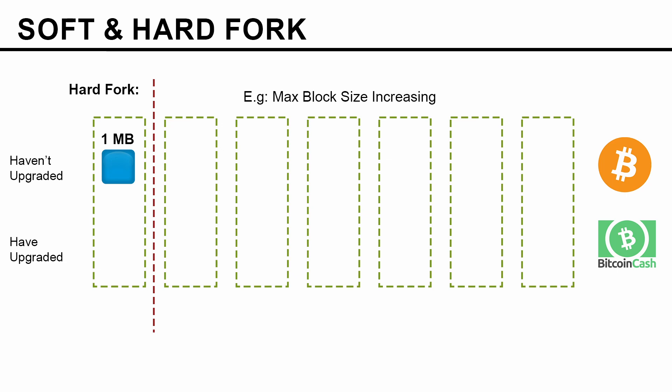Before the software was updated, everybody was on the same chain, and then the fork happened — somebody decided to go with the update whereas others stuck with the old rule. Now let's say the first block after the fork was found by a miner from the group who haven't upgraded their software, and this block was under 1 megabyte — let's say 0.7 megabyte. This block follows both the old and new rule and hence will be accepted by everyone in the whole network. Then another block was also found by this group, again less than 1 megabyte, so it is accepted by both groups — no conflicts yet.